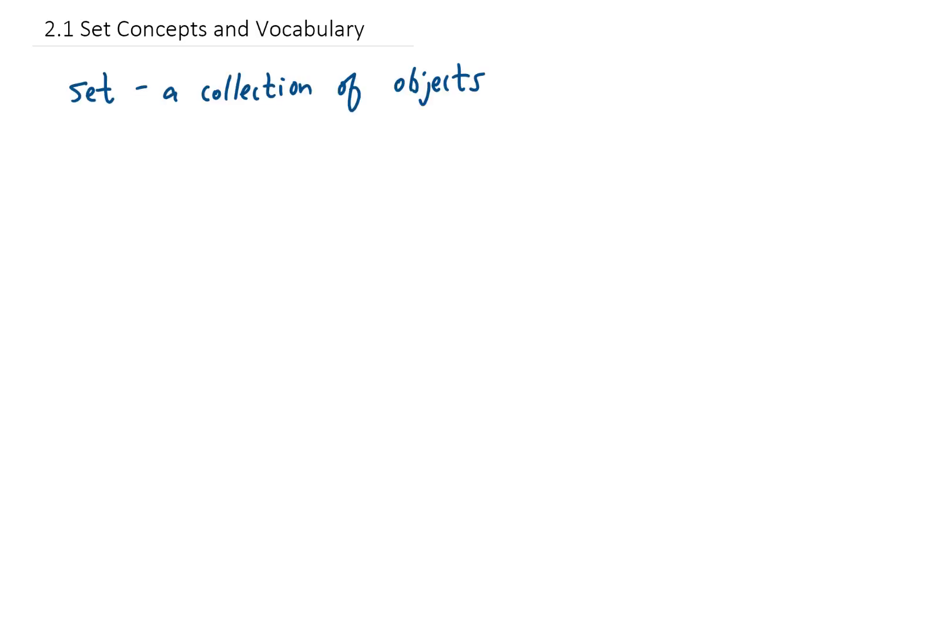A set is simply a collection of objects. Now here's an example of a set. This set is written in roster form because all of the objects or elements in this set are between a pair of these curly braces. And we can see that this set has three elements in it.